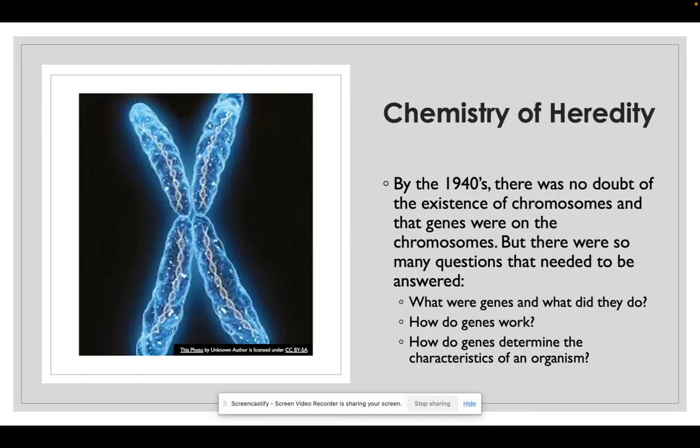So the chemistry of heredity. By the 1940s we had no doubt that chromosomes were a thing and that genes were on the chromosomes, but we had many more questions outside of that. We didn't really know what genes were, what they did, how genes worked, or how genes determine the characteristics of an organism.